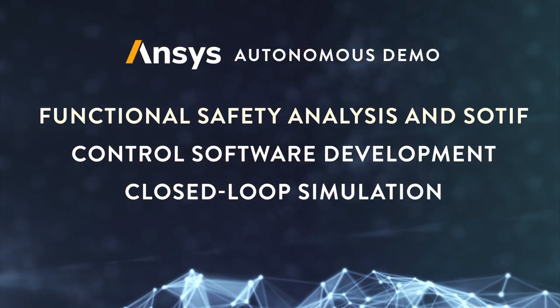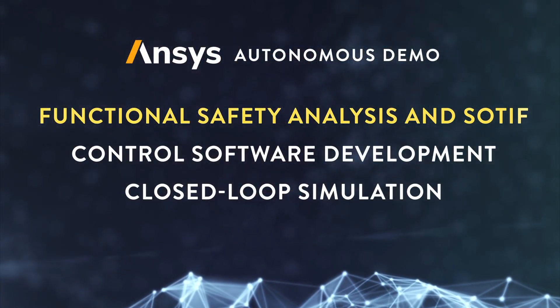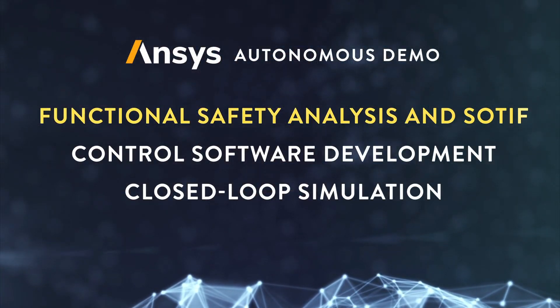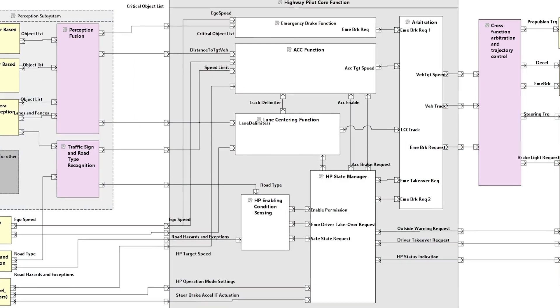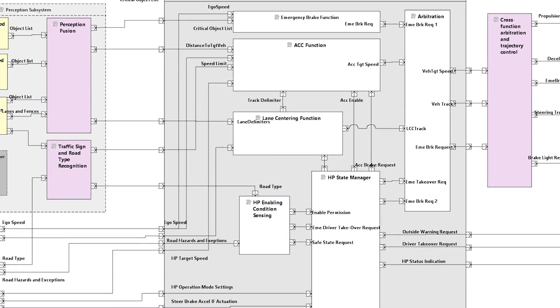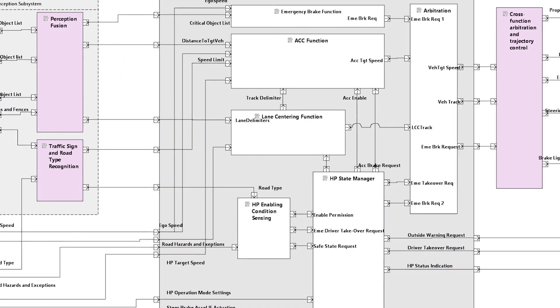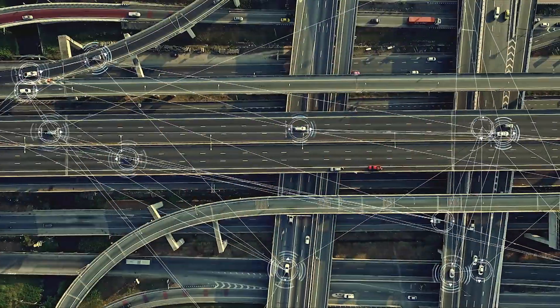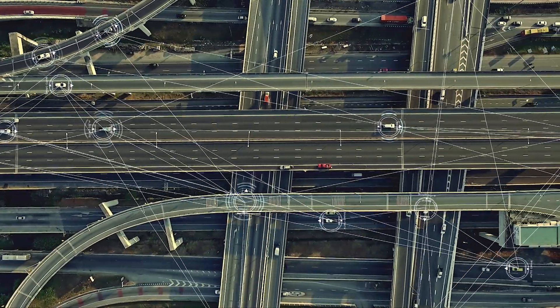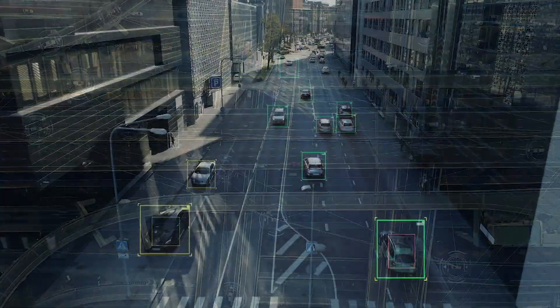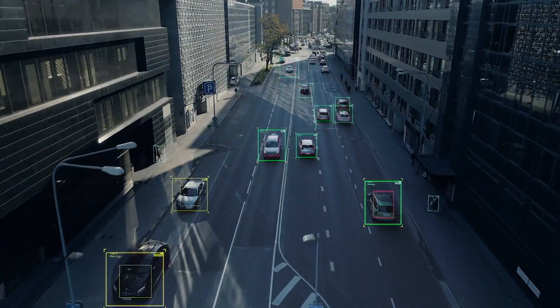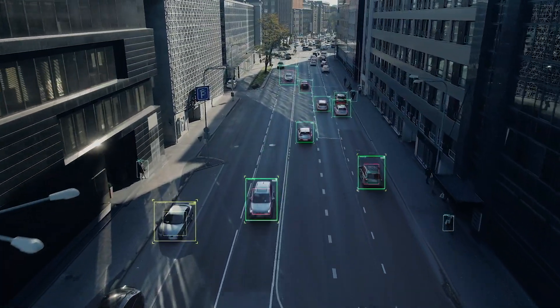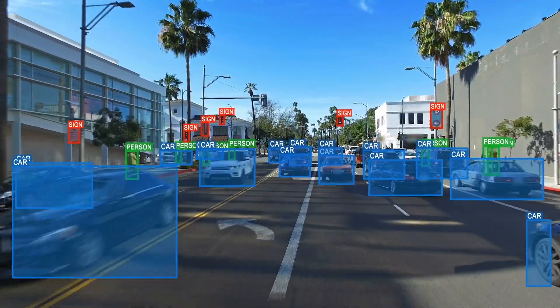Chapter 1: Functional Safety and SOTIF Analysis. We begin by defining the architecture of the system. Next, we need to ensure that the system is safe and takes into account varying traffic situations, along with system limitations and disturbances. Lives depend on it.